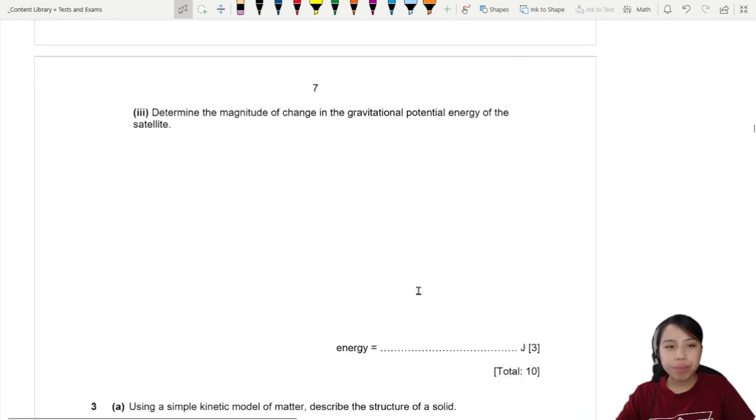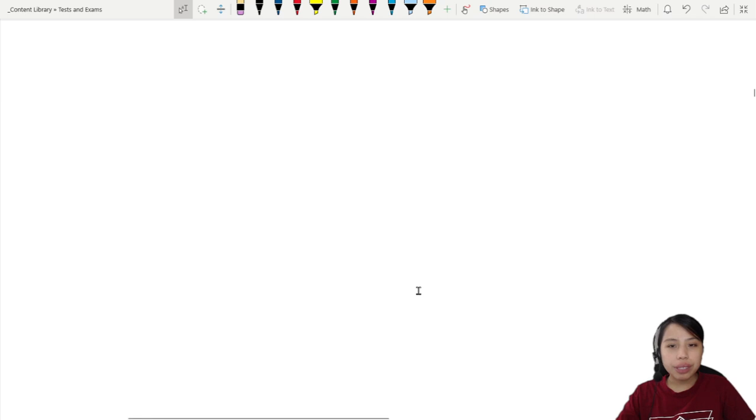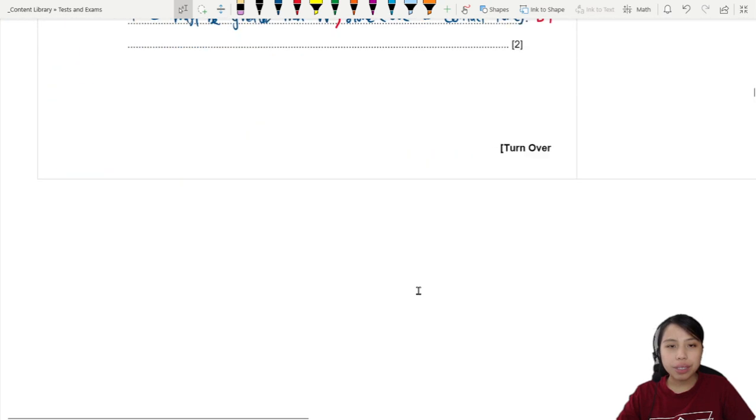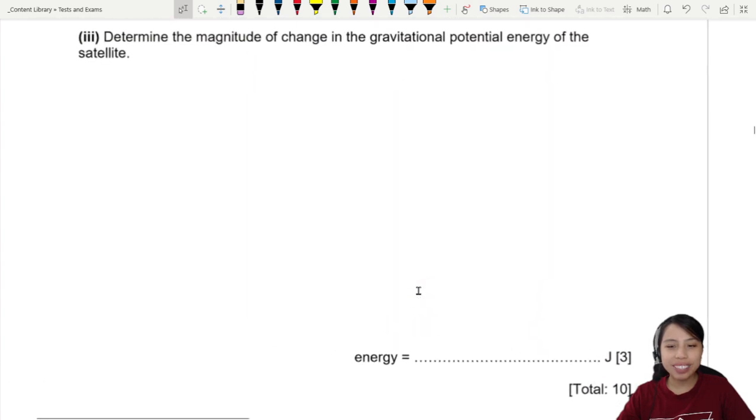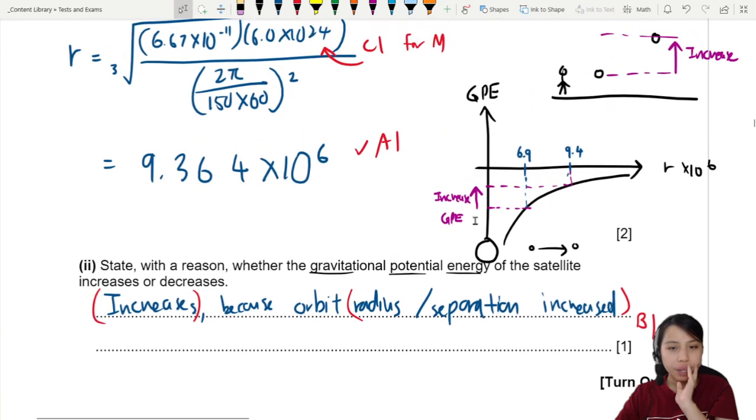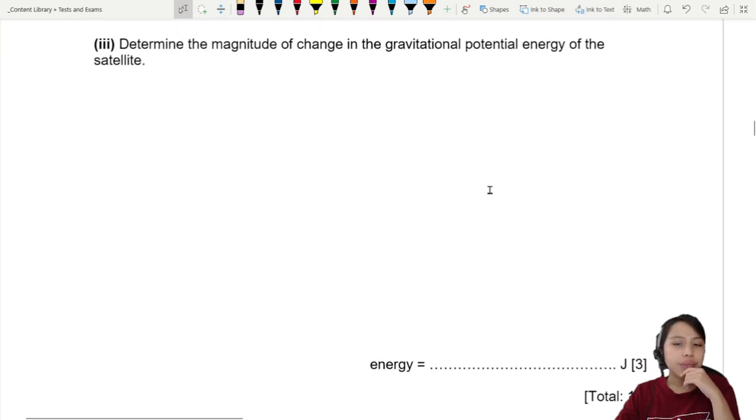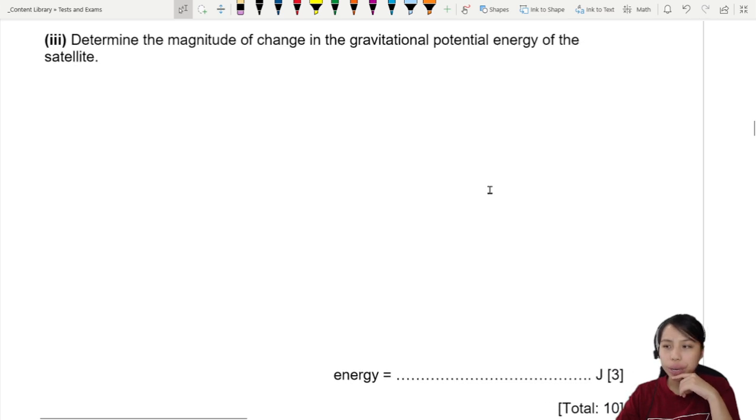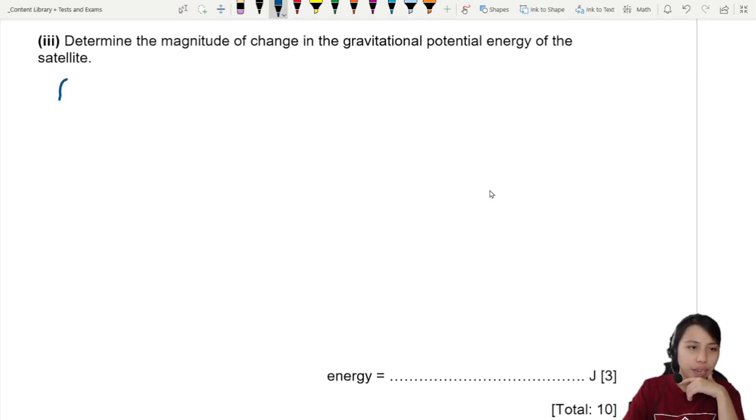Determine the magnitude of change in the GPE of the satellite. We kind of drew the graph already. There's an increase in GPE when you are nearer versus when you go further away. We need to find that value. For GPE, they didn't give us any other information, so we have to use our equation, which is that GPE at any position with respect to infinity is GMM over R.